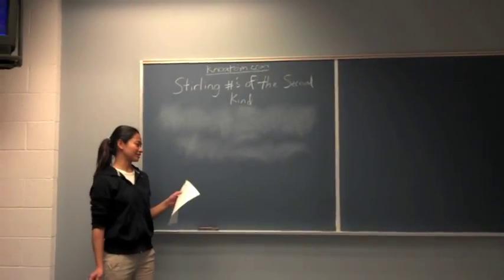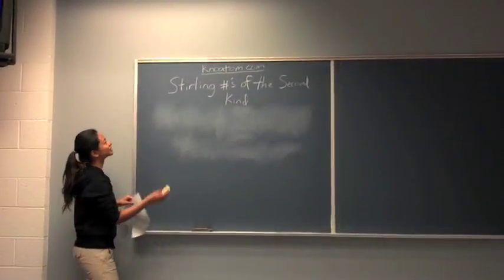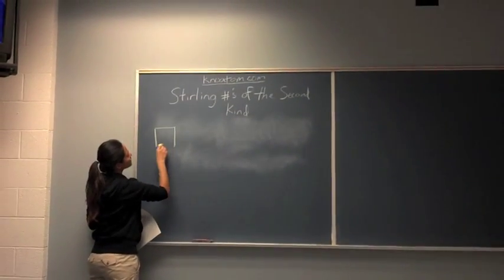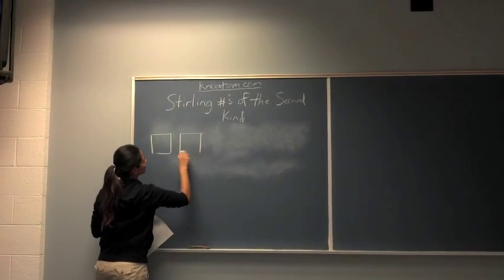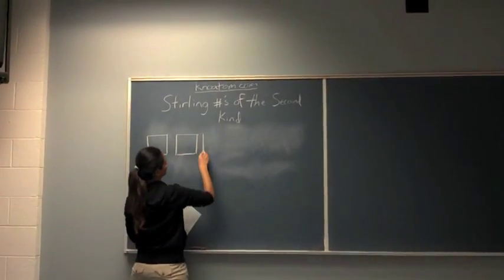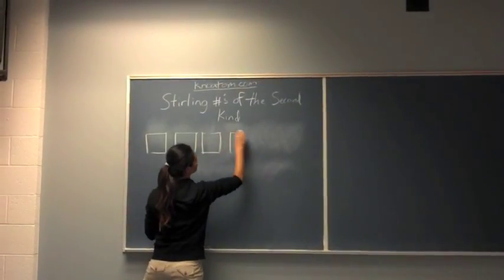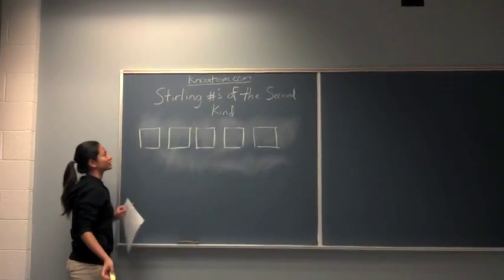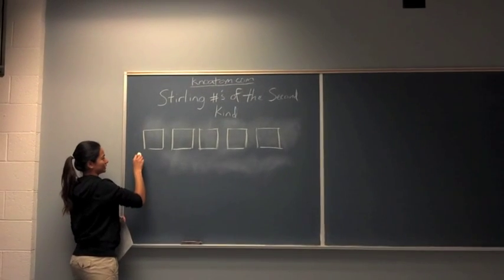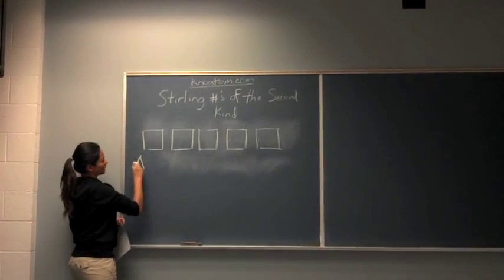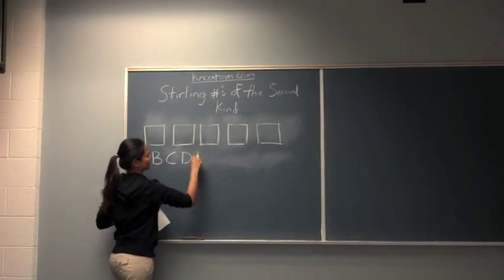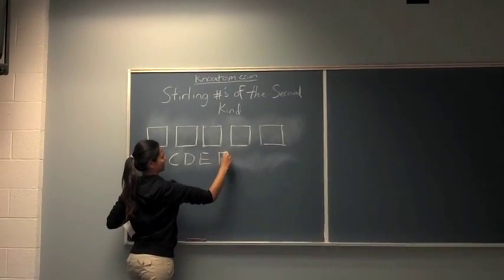So here's an example of how we use Stirling numbers. Let's say we have 5 rooms, which are indistinguishable, and let's say we have 6 people, A, B, C, D, E, and F.